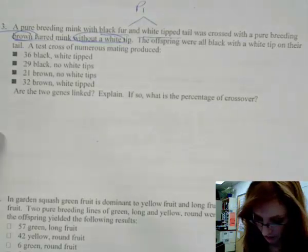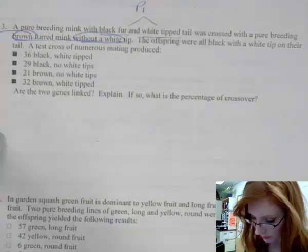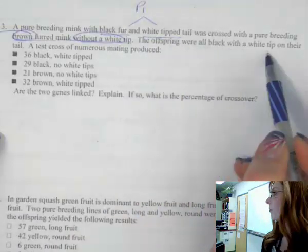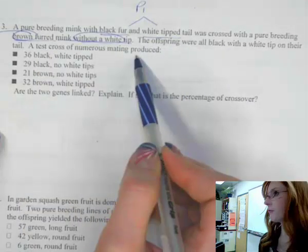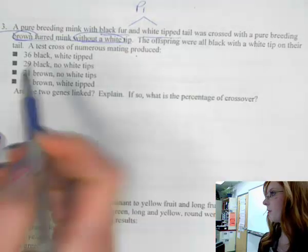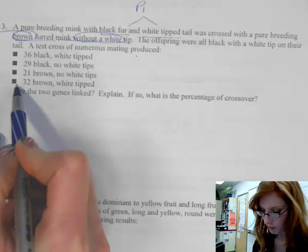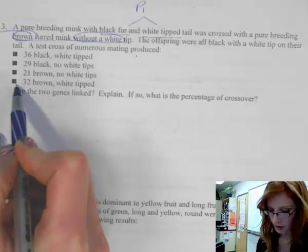Now for visual learners you could use two different pen colors for parent one and parent two. You could highlight them in different colors. Whatever method works best for you as long as you can find the parents. The offspring were all black with a white tip on their tail. A test cross reproduced the following.